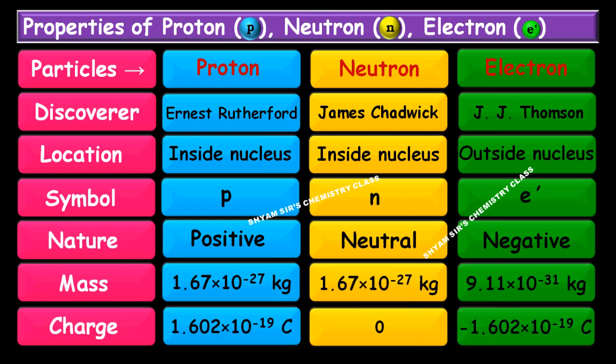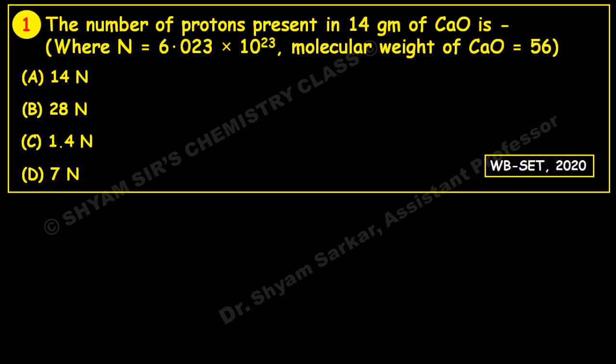Now we come to the question-answer discussion. The question is: the number of protons present in 14 grams of calcium oxide — four options are given. Also given: N, which is Avogadro's number, 6.023 × 10²³. Answers are expressed in terms of N. The molecular weight of calcium oxide is given as 56.